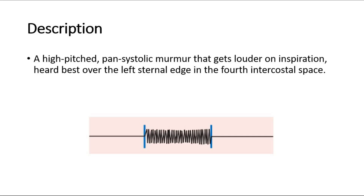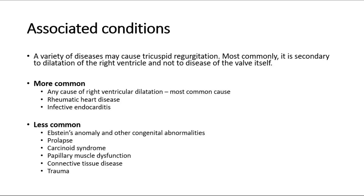A variety of diseases may cause tricuspid regurgitation. Most commonly, it is secondary to dilatation of the right ventricle and not to disease of the valve itself. Any cause of right ventricular dilatation can cause tricuspid regurgitation, and it is the most common cause. Other common causes include rheumatic heart disease and infective endocarditis.